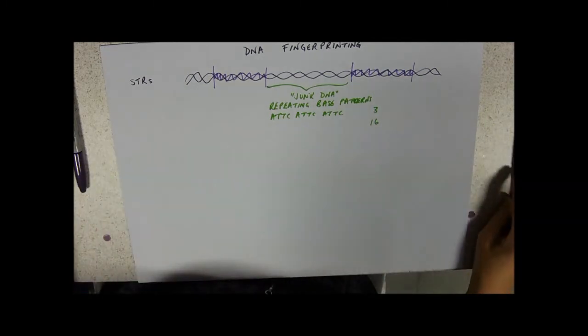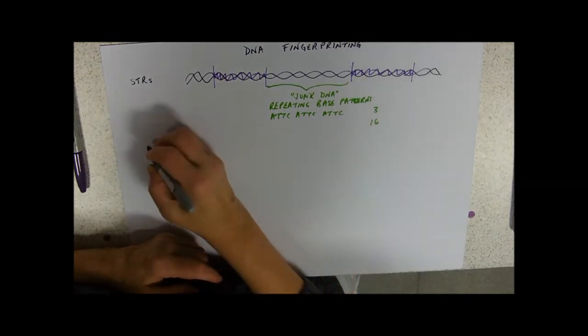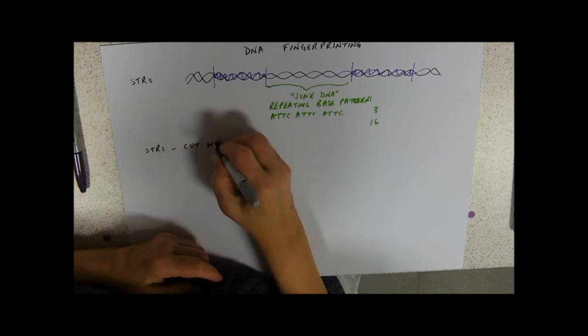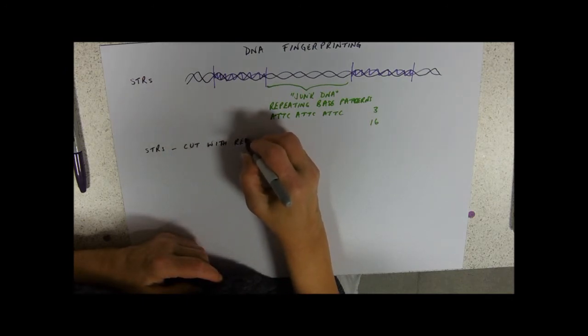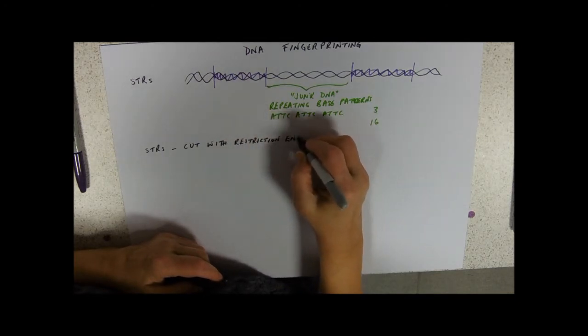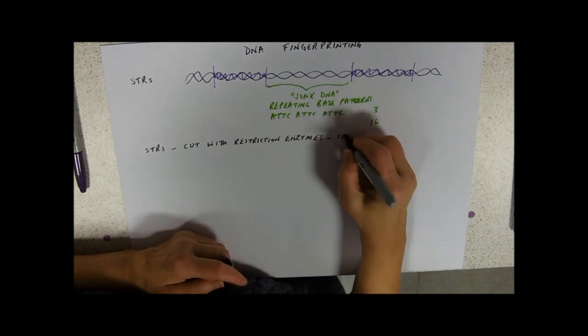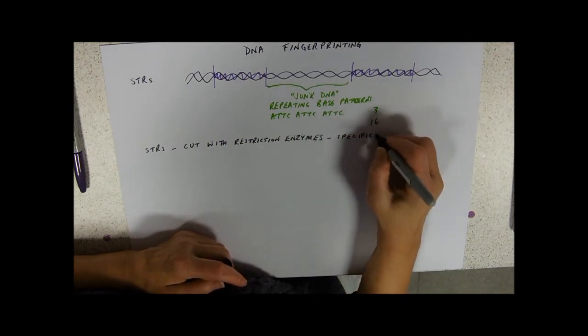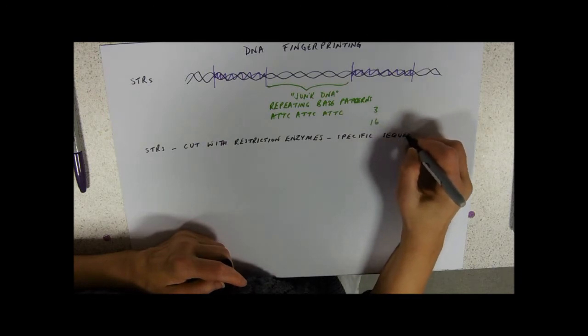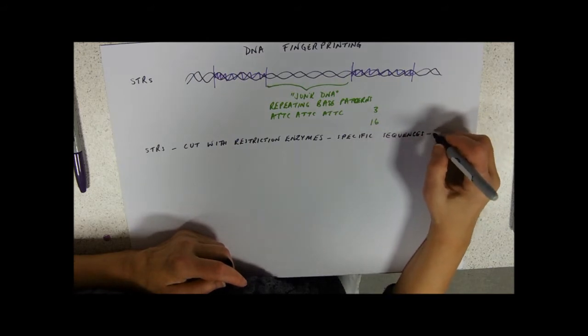So everybody's got a unique pattern of these properties. The technique actually involves cutting these STRs with restriction enzymes. There are a few available, these all cut at specific sequences and therefore produce fragments.